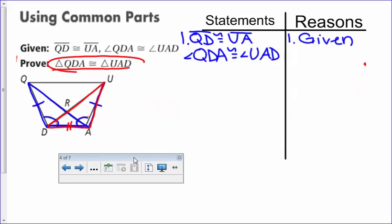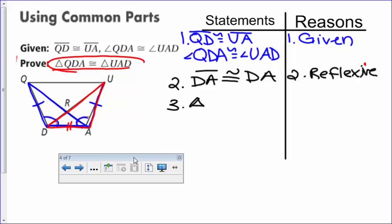It's the same congruent statement over here. So that's my proof in verbal form. Now let's put it in writing. We've already got our given statement, which you need to start with. And then I'm going to follow that up with the reflexive side that we just came up with. DA is congruent to DA. Reason is reflexive. That's the only thing I added to my picture that wasn't already there. So now I can say we have enough information to write the proof statement. Triangle QDA is congruent to triangle UAD. And my reasoning would came up with side, angle, side.